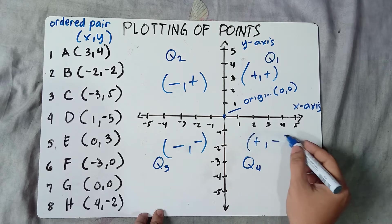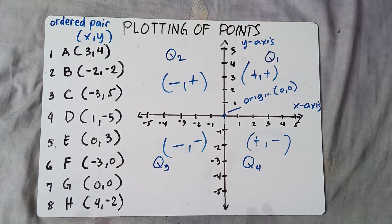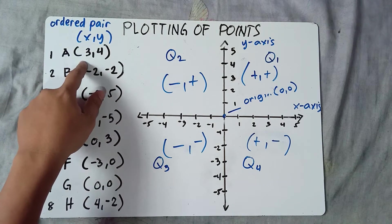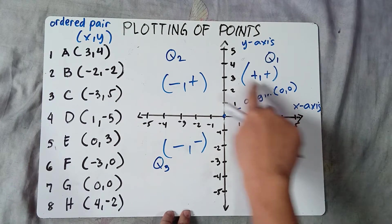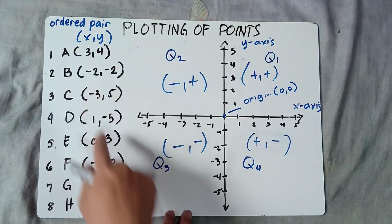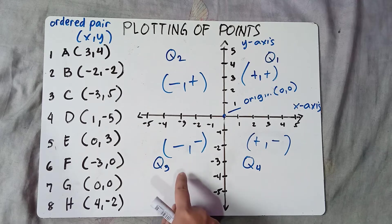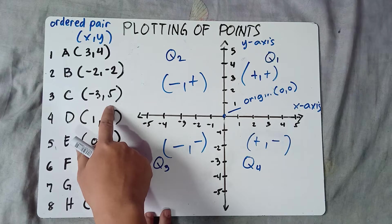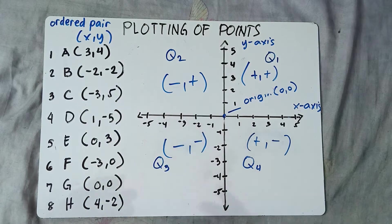So you always follow the ordered pair, x and y. The good thing about knowing the signs of the quadrants is: if you see the given and the numbers are all positive, you plot that in quadrant 1. If the numbers are all negative, you plot that in quadrant 3. If x is negative and y is positive, you plot that in quadrant 2.